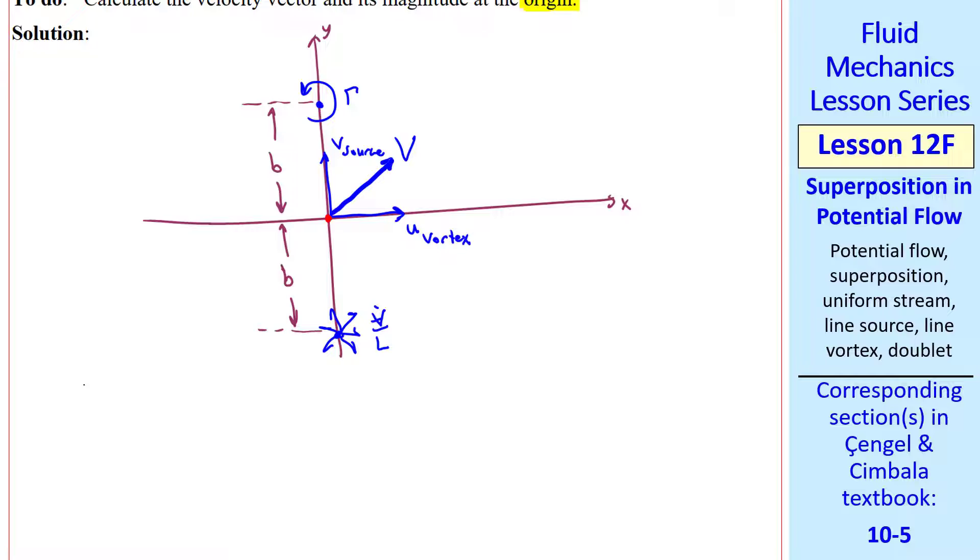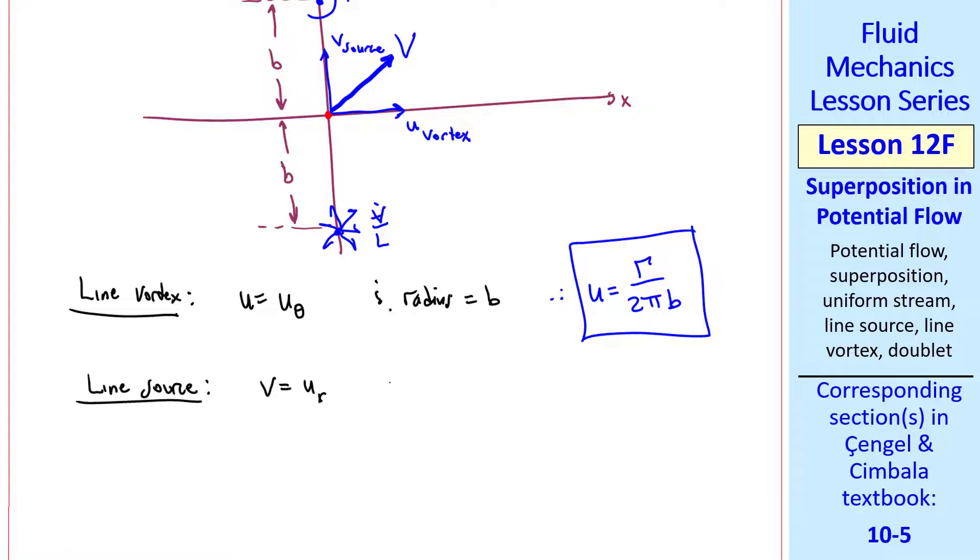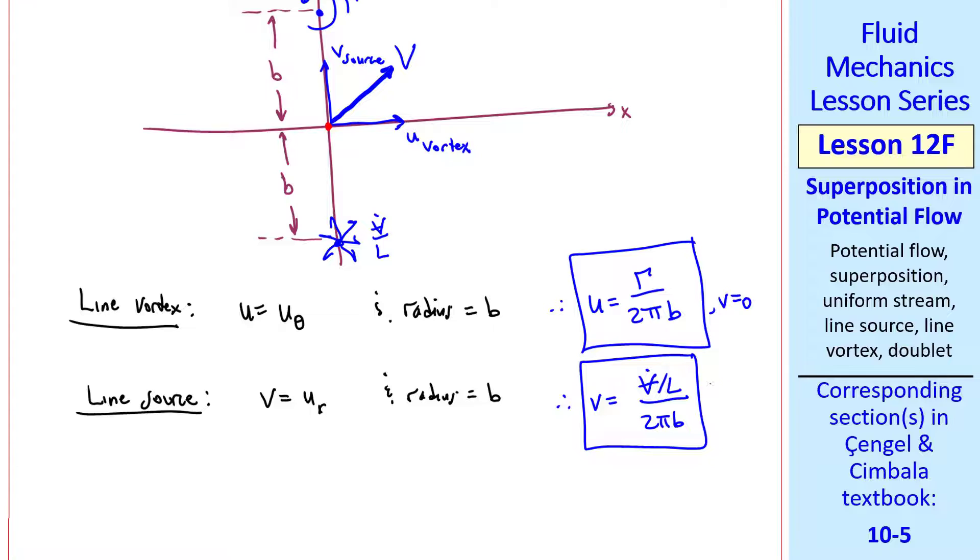Now we use our equations to find this. u is just u theta here, and the radius from the vortex to our point is b, so u is gamma over 2 pi b. For the line source, v is ur, and the radius is also b here from the source to our point of interest. There's only a vertical component, and v turns out to be v dot over l 2 pi b. For the line vortex, v is 0 in this problem, and for the line source, u is 0 in this problem, as we indicated here.